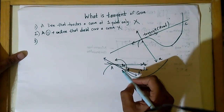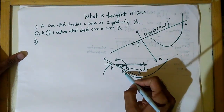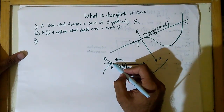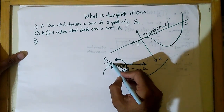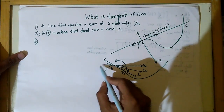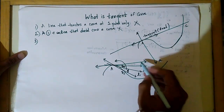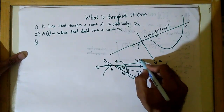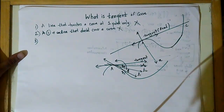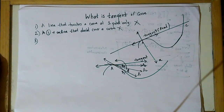Now, what a tangent is: if I bring the second point B close enough to A — so close that the first point and second point are essentially the same — and draw a line through them, that line is the tangent. That is the key insight.